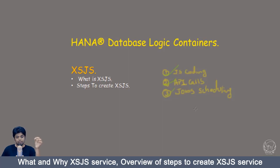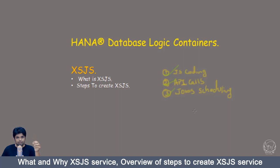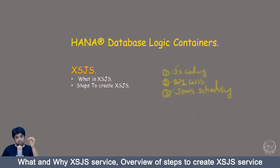The third important feature you can use with XS JS service is Job Scheduling. You can schedule a job for XS JS service which you may choose to run every 5 minutes, 10 minutes, every second, every day, or every year, and that service will be repeated again and again. That is the use of Job Scheduling in XS JS service.